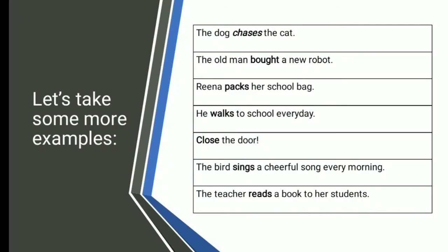Let's take some more examples. The dog chases the cat — the verb in this sentence is chases. The old man bought a new robot — the verb is bought. Rina packs her school bag — the verb is packs. He walks to school every day — the verb is walks. Close the door — the verb is close. The bird sings a cheerful song every morning — the verb is sings. The teacher reads a book to her students — the verb is reads.